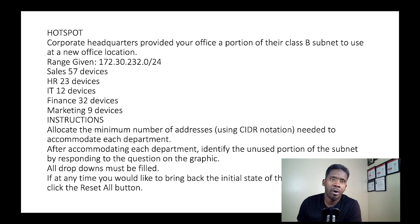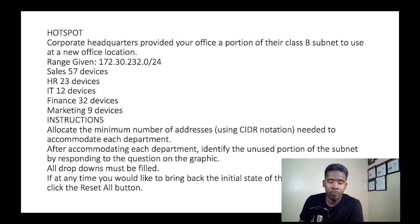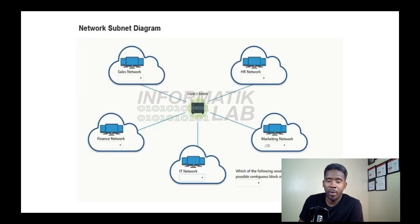The instructions say to allocate the minimum number of addresses using CIDR notation needed to accommodate each department. After accommodating each department, identify the unused portion of the subnet by responding to the question on the graphic. Let's get started.